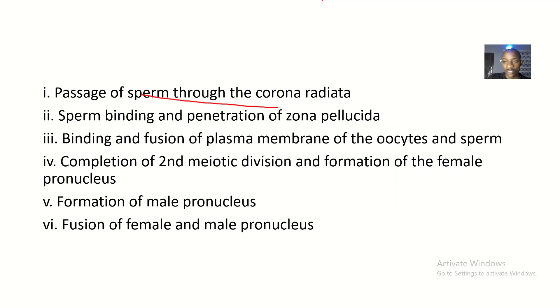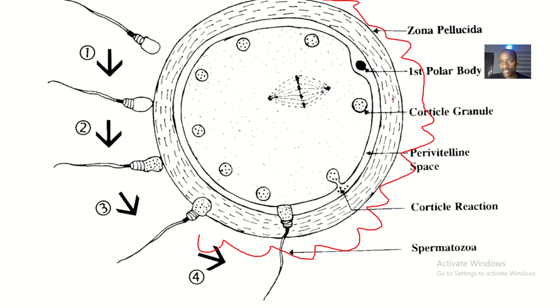The next phase is the binding and penetration of the zona pellucida. The zona pellucida is indicated here — this is the zona pellucida. The sperm also has to pass through the zona pellucida before it gets to the egg.